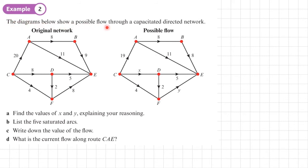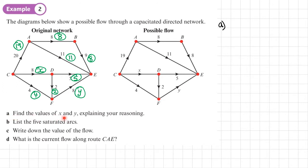Example 2. The diagrams show a possible flow for a capacitated directed network — here's the original network and here are the possible flows. We can write down those flows on the original network. Now for part A, find the values of X and Y explaining your reasoning. We'll start with X, using the conservation condition: the flow into a vertex equals the flow out of a vertex. X flows into D.